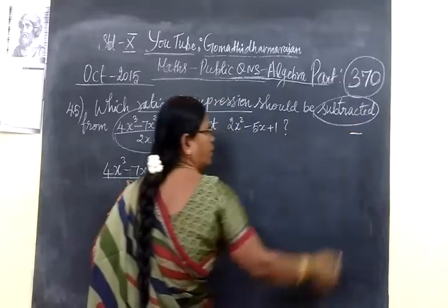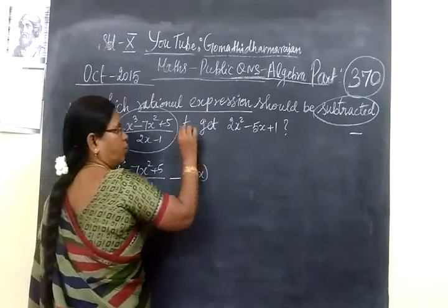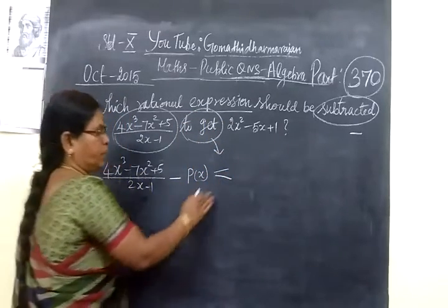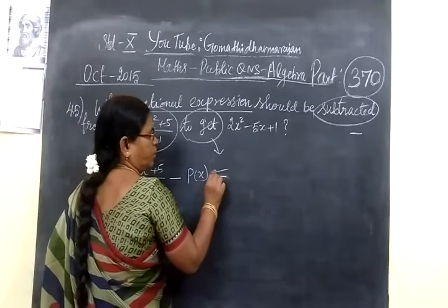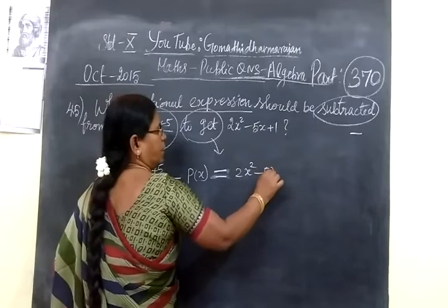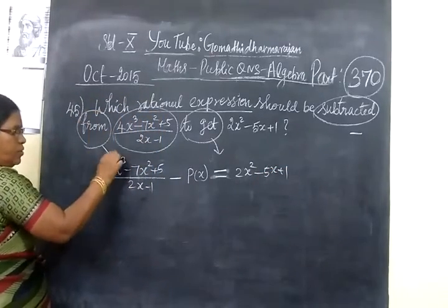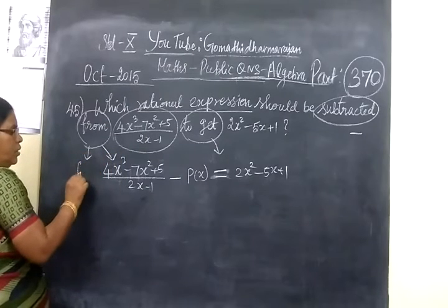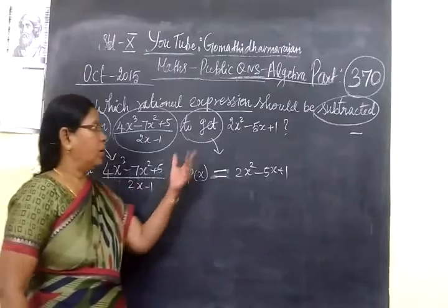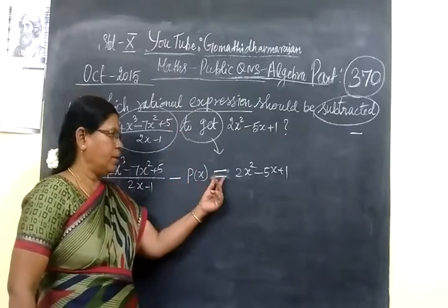So we are using minus sign. This is some P of X subtracted to get this. Equal to 2x square minus 5x plus 1. From the beginning, you write it first. Then we take the expression some P of X, separate side equal to this.